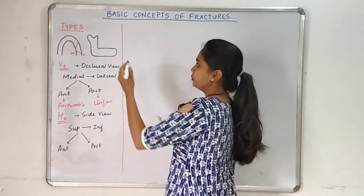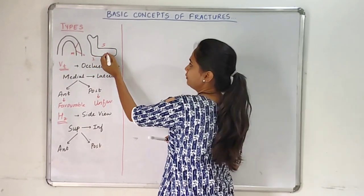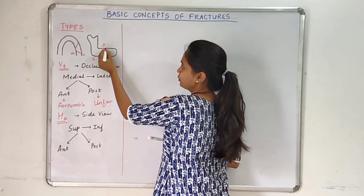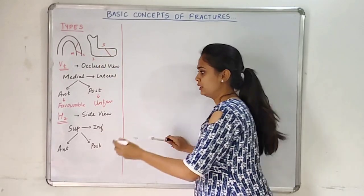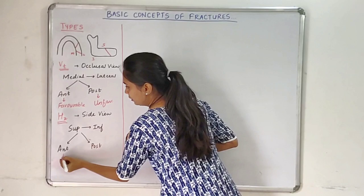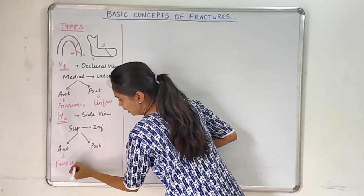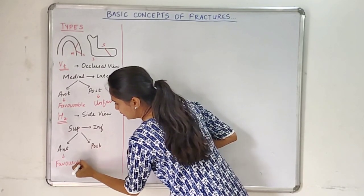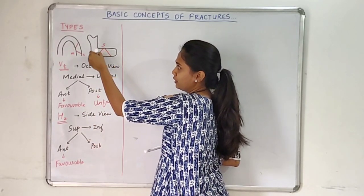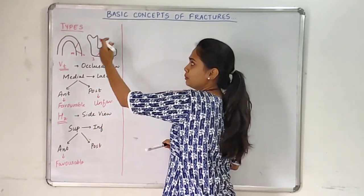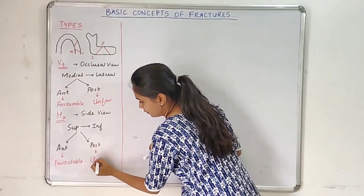This is the superior border and this is the inferior border. If the fracture line is going from superior to inferior in an anterior direction, it will be a favorable fracture. If the line is going from the superior to the inferior border in a posterior direction, then it is an unfavorable fracture.